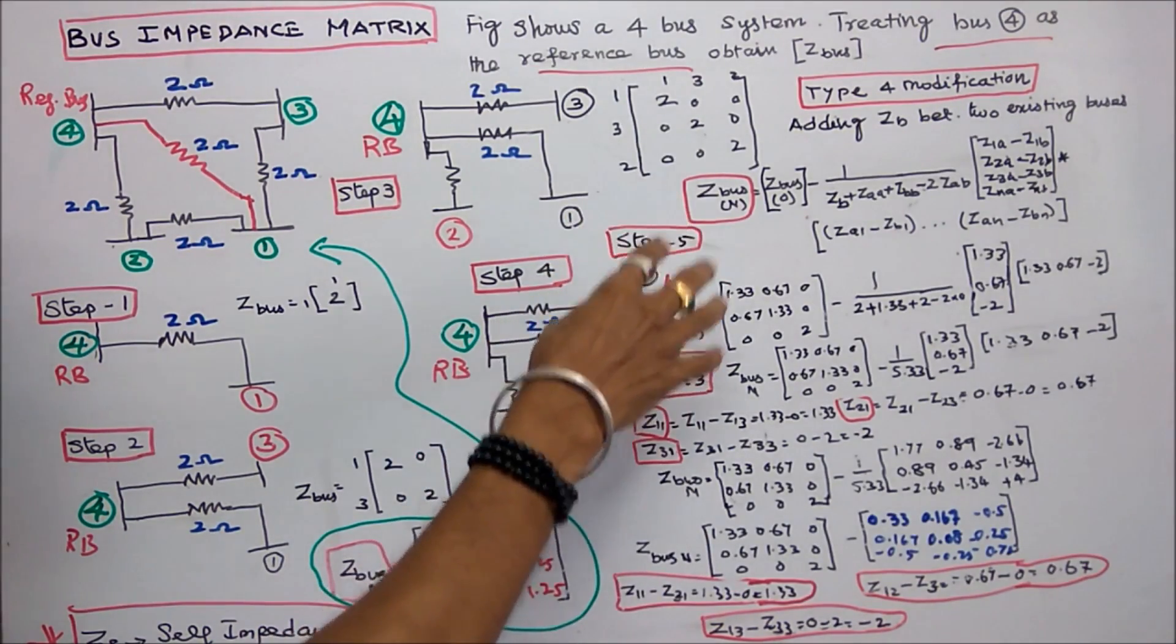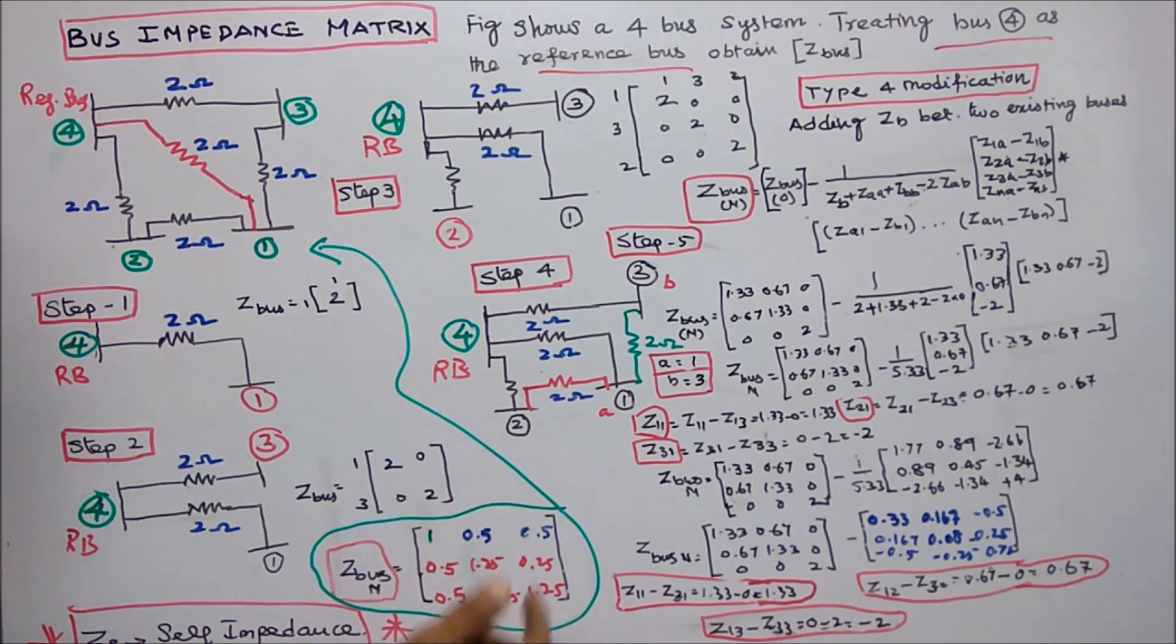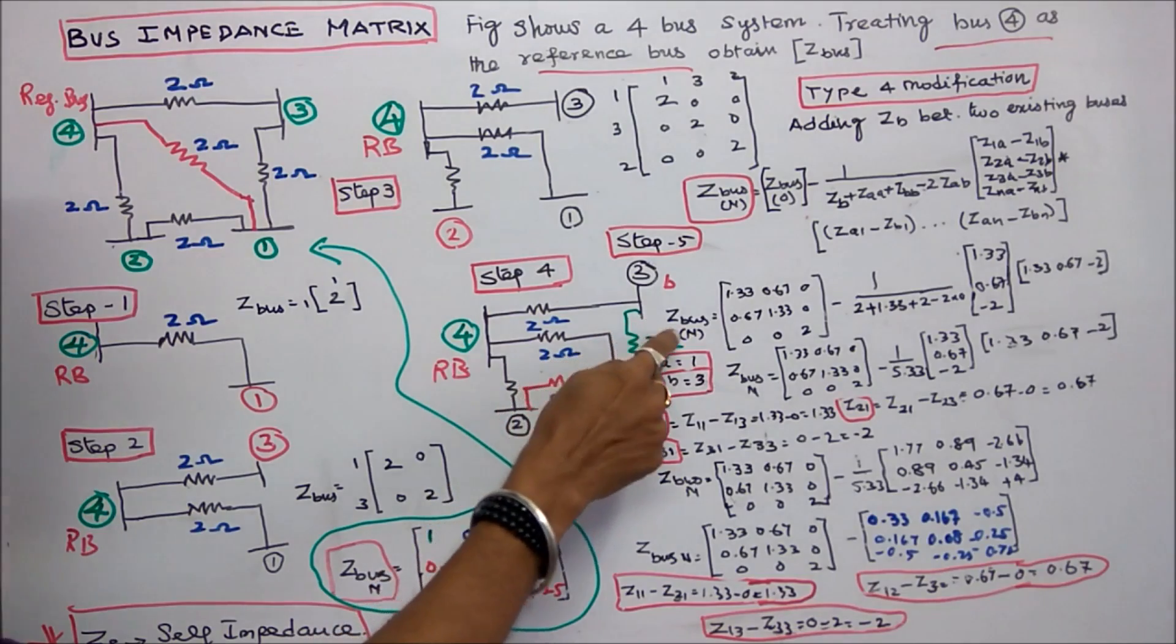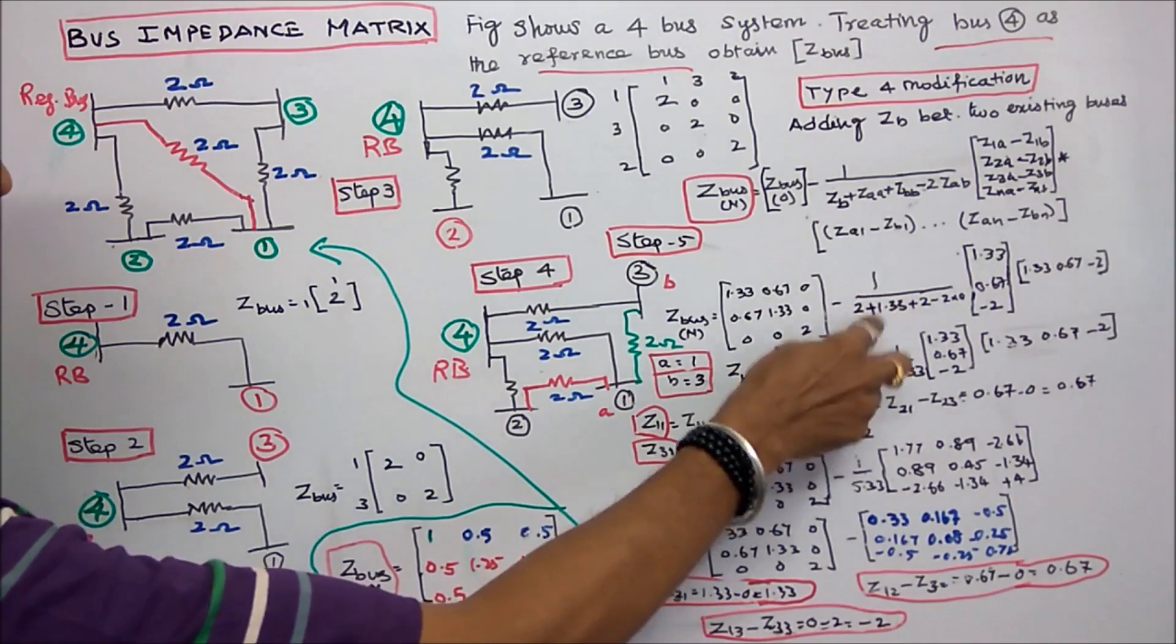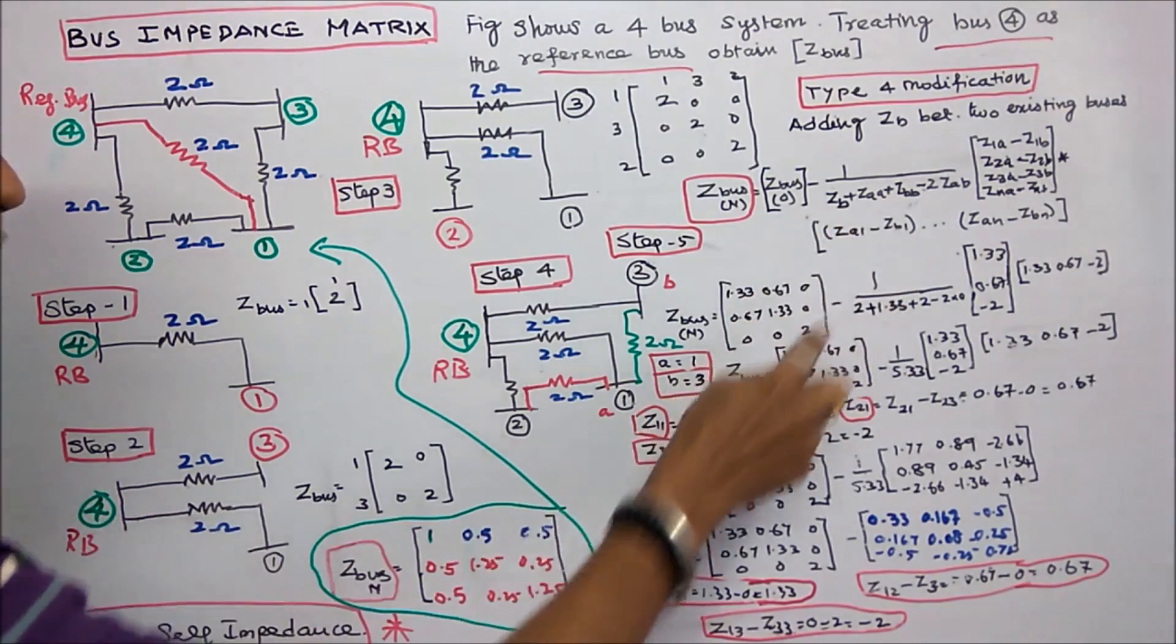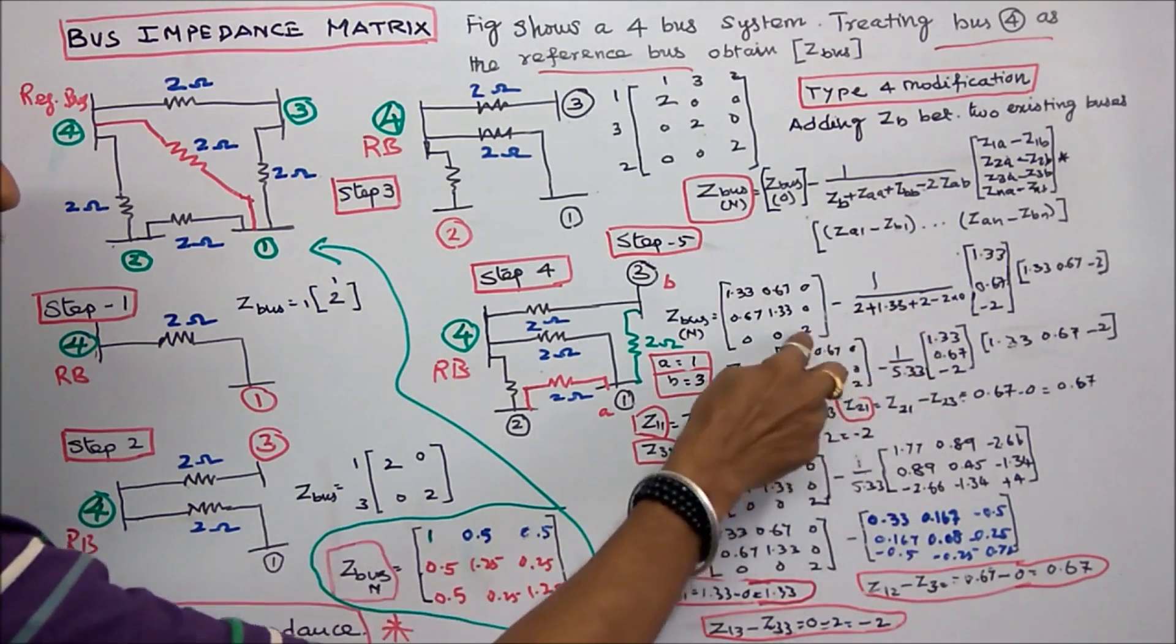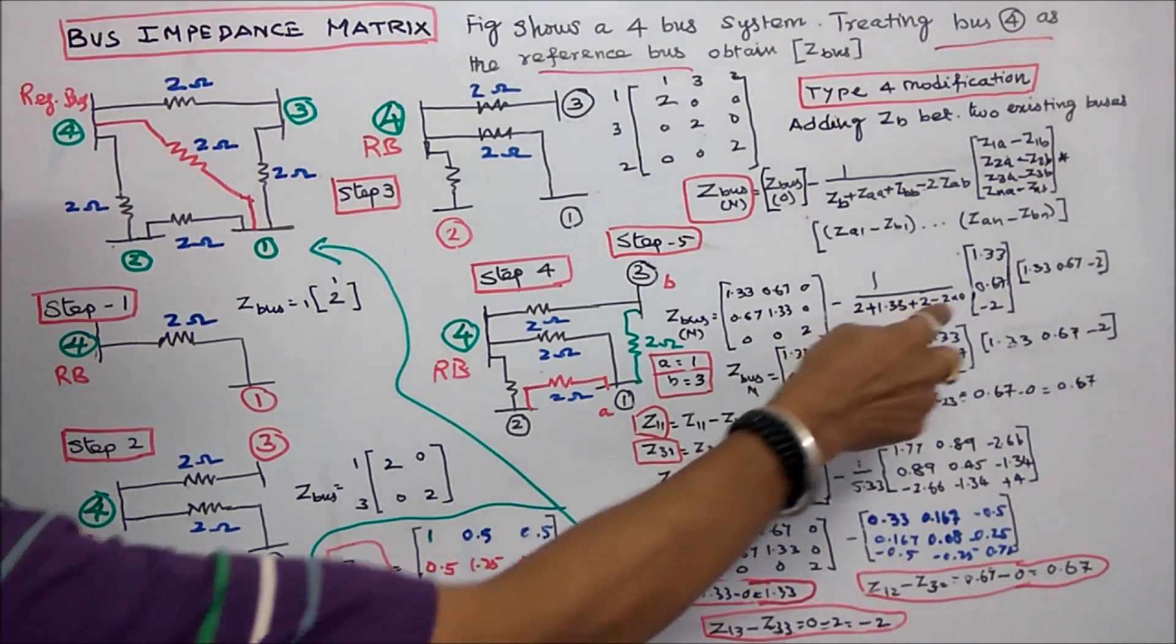Step 5 is a type 4 modification, adding ZB between two existing buses or old buses. Here old bus 1 is equal to A, old bus 3 is equal to B. Z bus new is equal to old Z bus minus 1 by ZB. ZB is equal to 2 plus ZAA, A is equal to 1, Z11 is equal to 1.33 plus ZBB, B is equal to 3, Z33 is equal to 2 minus 2 into Z13. Z13 is 0, therefore this term is 0.